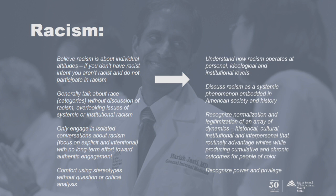There's also a comfort with using stereotypes without critical analysis. When we apply the anti-racism lens or shift, we understand racism operates on personal, ideological, and institutional levels. We discuss racism as a systemic phenomenon embedded in American society and history — there's a historical component. We recognize the normalization and legitimization of an array of dynamics: what is perceived as normal in history, culture, institutions, and interpersonal relationships. We also understand the cumulative and chronic outcomes associated with experiencing racism, and we recognize power and privilege.